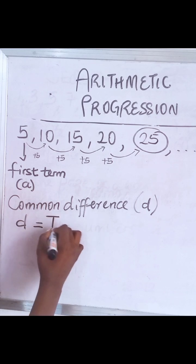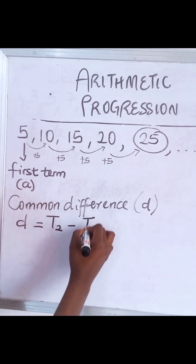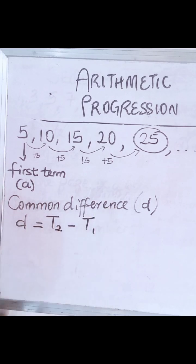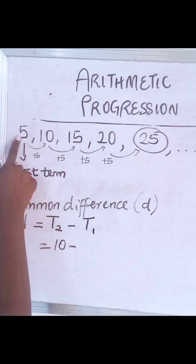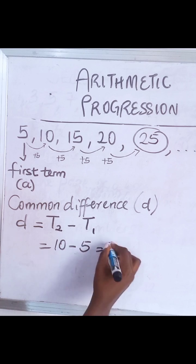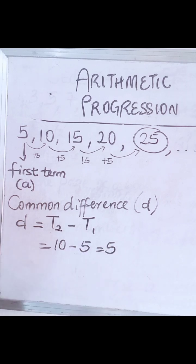So D is known by taking the second term minus the first term. That's why it's called a difference. So your second term is what? Ten minus your first term is what? Five. So it gives you five. So this way you're able to tell that the difference between them is five.